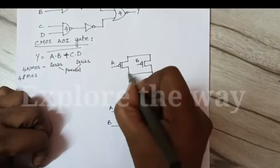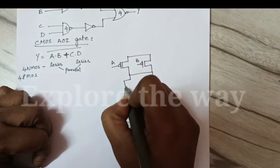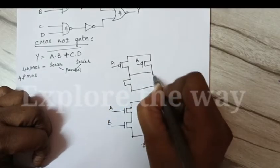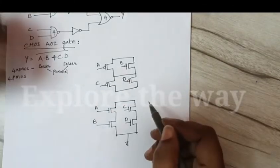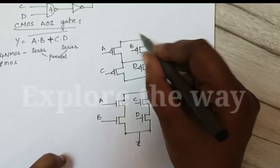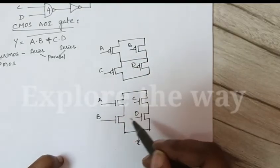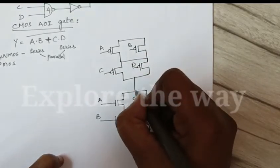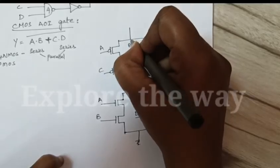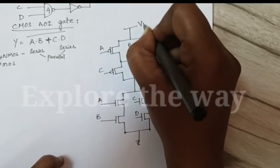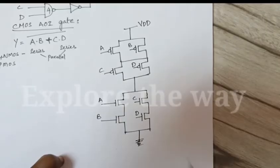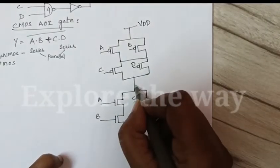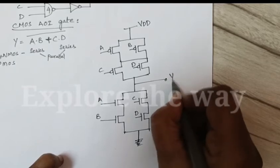Similarly CD must be connected in parallel. This is the pull-up network and this is the pull-down network. These two must be connected like this. This pull-up network must be connected to VDD, and pull-down network is connected to ground. Here we can take the output Y.